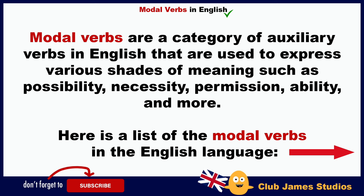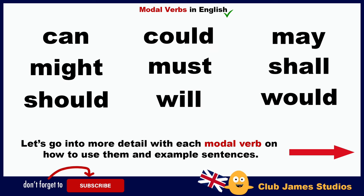Modal verbs are a category of auxiliary verbs in English that are used to express various shades of meaning such as possibility, necessity, permission, ability, and more. Here is a list of modal verbs in the English language: can, could, may, might, must, shall, should, will, would. Let's go into more detail with each modal verb on how to use them and example sentences.